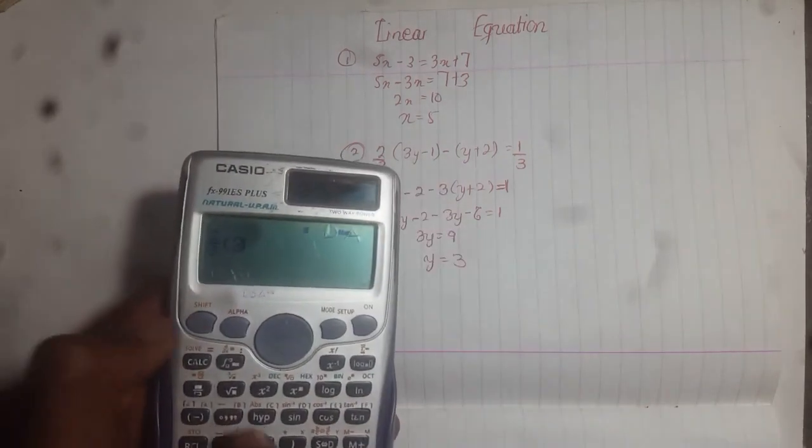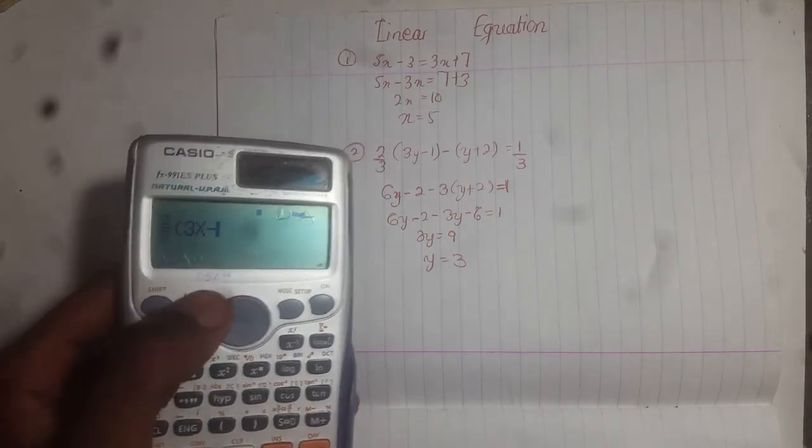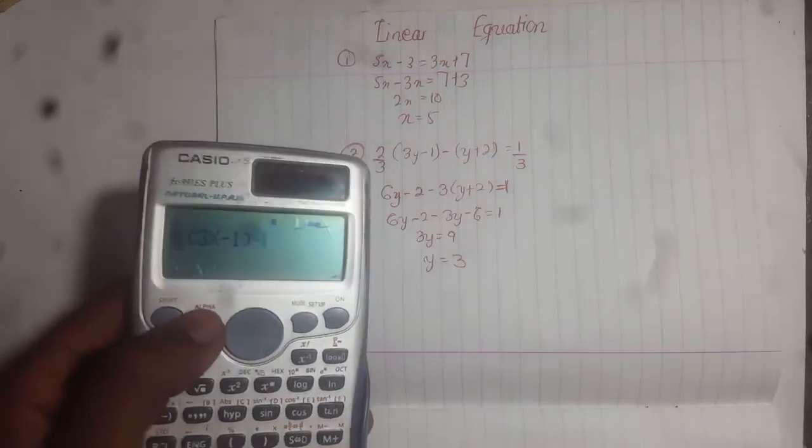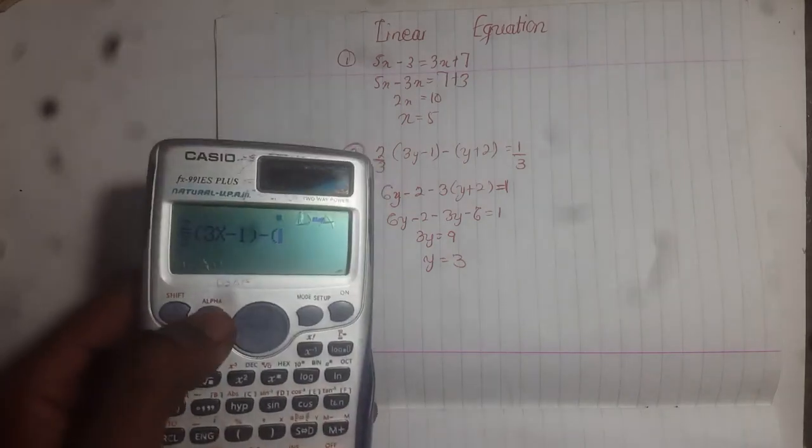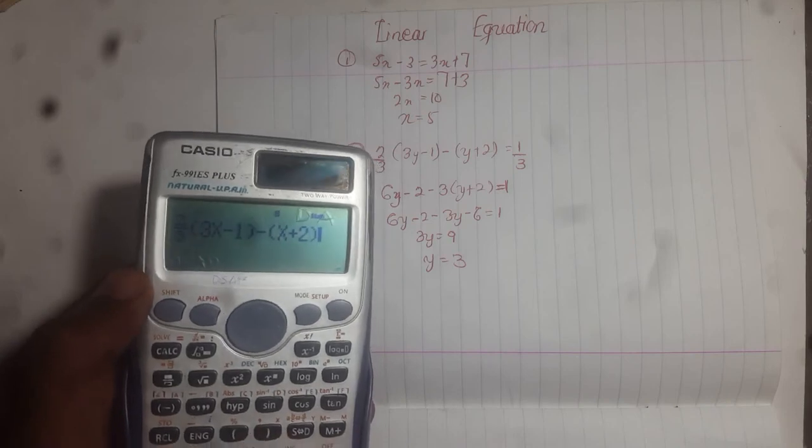3y minus 1, 3y. So your variable should always be x minus 1. Then I close the bracket, minus, open bracket. Then my variable x plus 2. I close the bracket.